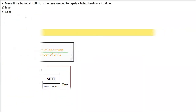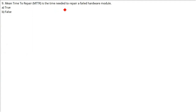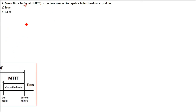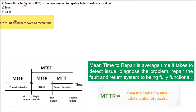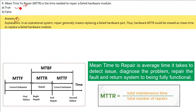MTTR - mean time to repair - is the time needed to repair a failed hardware module. In an operational system, MTTR is the average time it takes to detect the issue, diagnose the problem, repair the fault, and return the system to full operation. In hardware contexts, repair generally means replacing a failed part, so hardware MTTR can also be viewed as mean time to replace a failed hardware module.